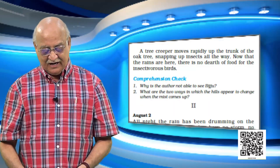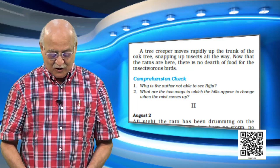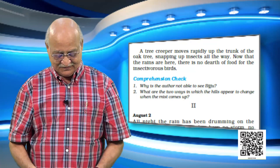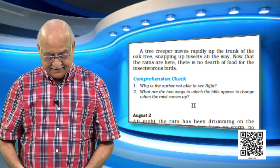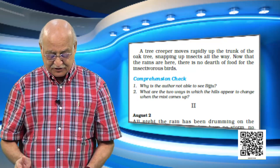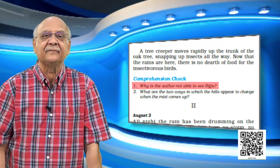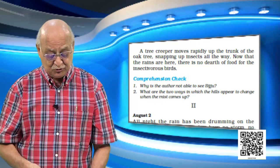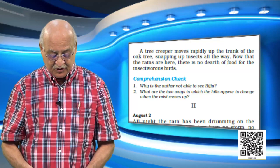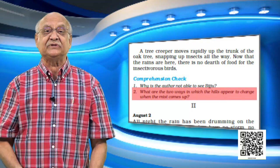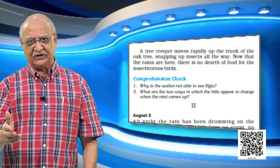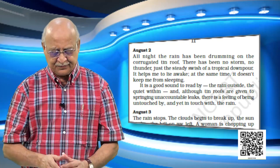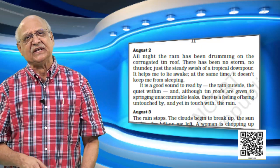Now at the next page you will find a comprehension check. Look at the questions. Number one: Why is the author not able to see Biju? Because of the mist — he is not able to see Biju at all. Question number two: What are the two ways in which the hills appear to change when the mist comes up? You can look at the text and discuss that with your friends. So we are into nature, monsoon, and we have come to August 2nd in part two.